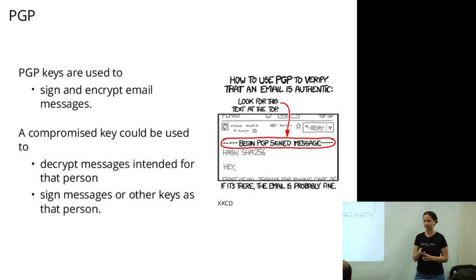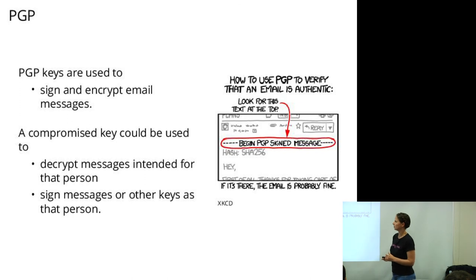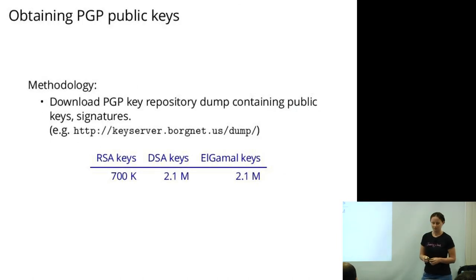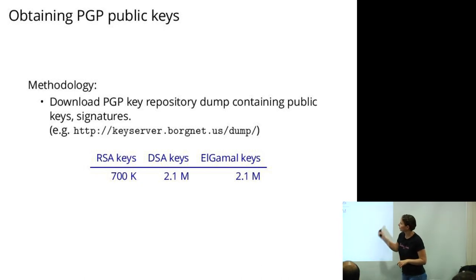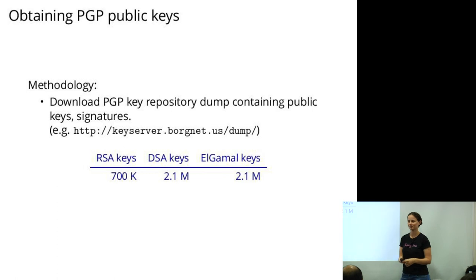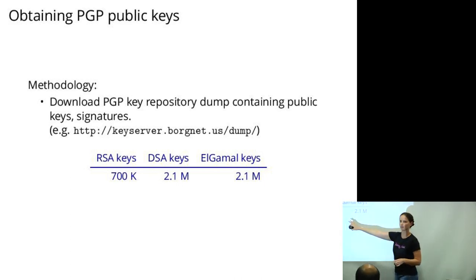PGP is another large public key infrastructure. PGP keys can be used to sign and encrypt email messages; if you compromise somebody's PGP key you can decrypt messages intended for them or sign as that person. PGP is interesting because you can download public repositories of PGP keys from the internet in bulk. These are designed for people who want to start their own PGP key servers and join the web of trust — you can just download millions of people's public PGP keys. For PGP, ElGamal and DSA are much more common than RSA, which is a historical artifact.